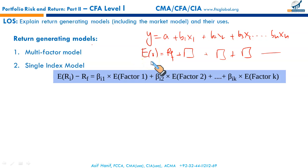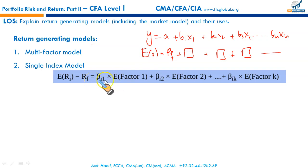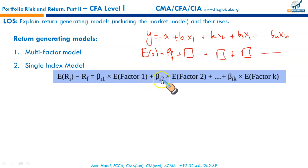This model states that the expected excess return — that is, ER minus RF — for a certain asset is the sum of each factor's sensitivity (beta), also called the factor loading, multiplied by the expected value of that factor for the period. Adding these all up gives you the expected excess return. That is your multi-factor model.